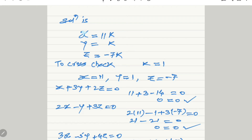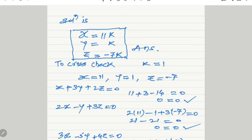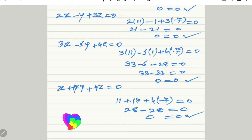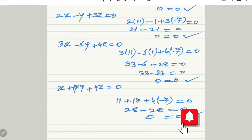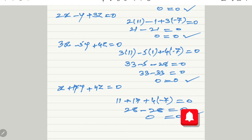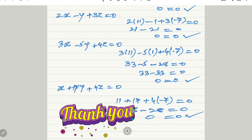Therefore, the required solution is x = 11k, y = k, and z = minus 7k. Please like my video, share it, and subscribe to my channel. To receive notifications for new videos, please press the bell icon. Thank you.